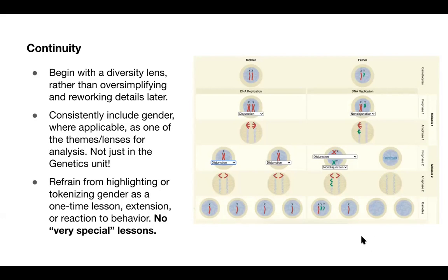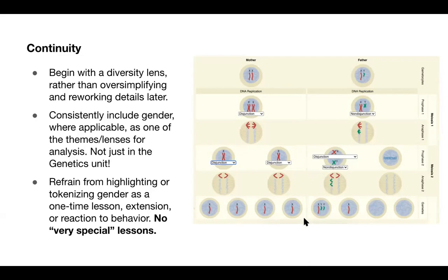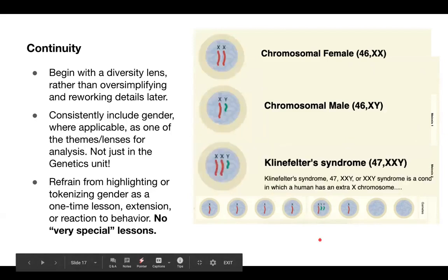So instead of reaching for exclusion and imprecision, we can lean into the freedom that diversity offers us. When we open up the space to different ideas and discoveries, learning becomes far more accessible and affirming for all students. This game from Matt Gilbert and Sarah Freeman shows the naturally occurring disjunction and non-disjunction combinations that can result in more than just XX and XY karyotypes.